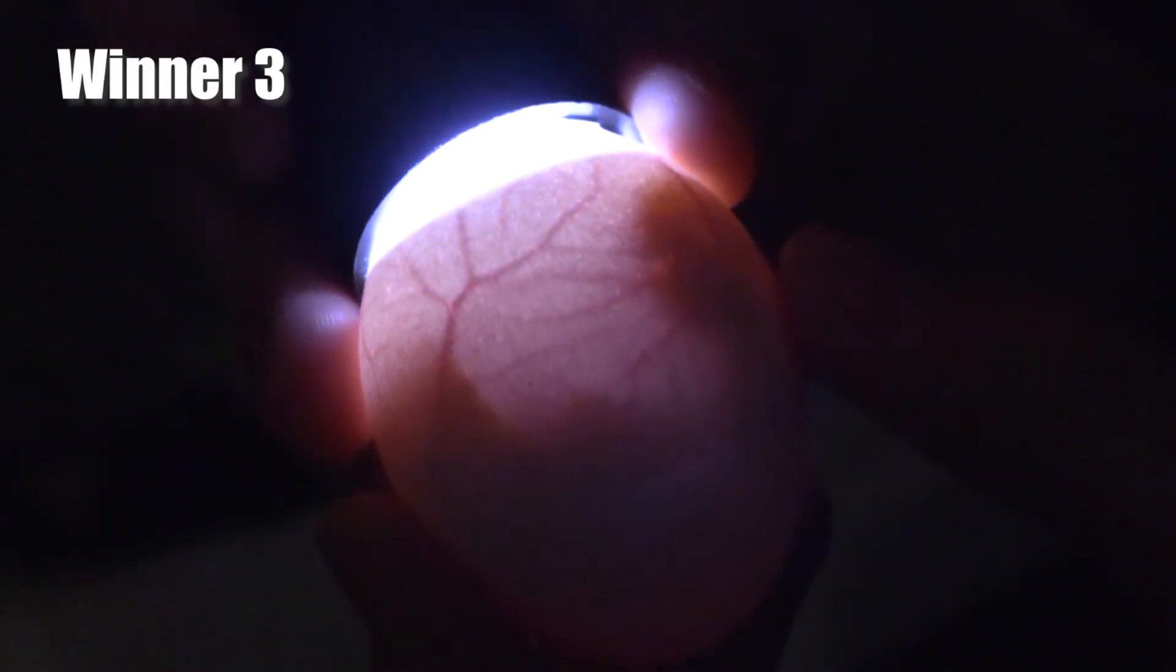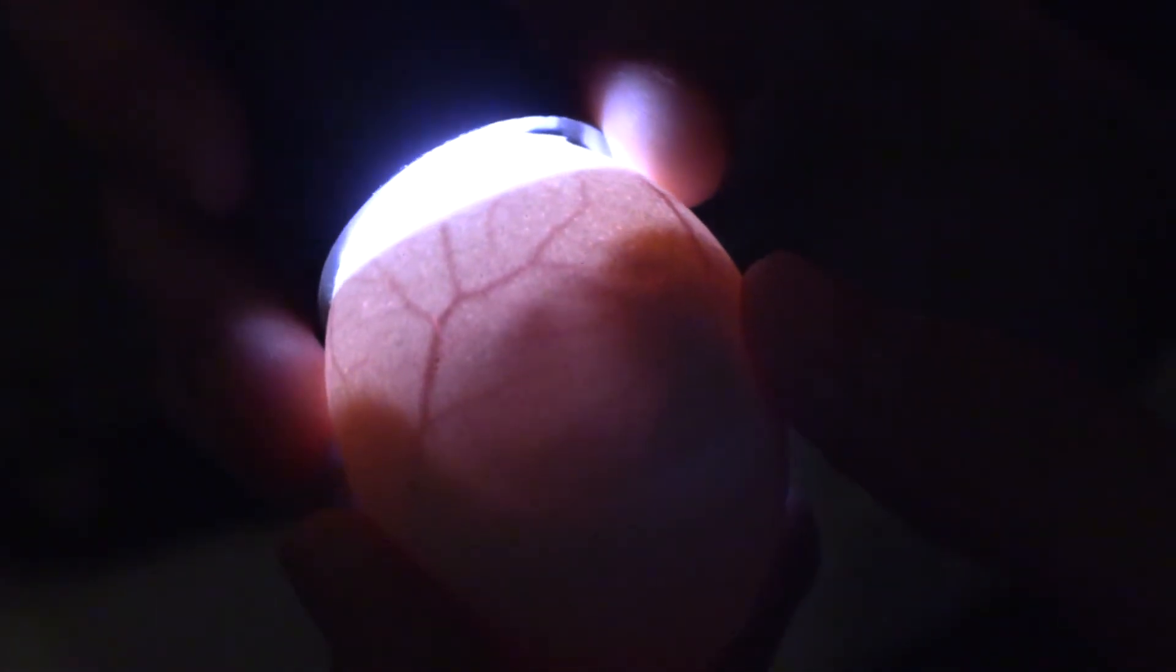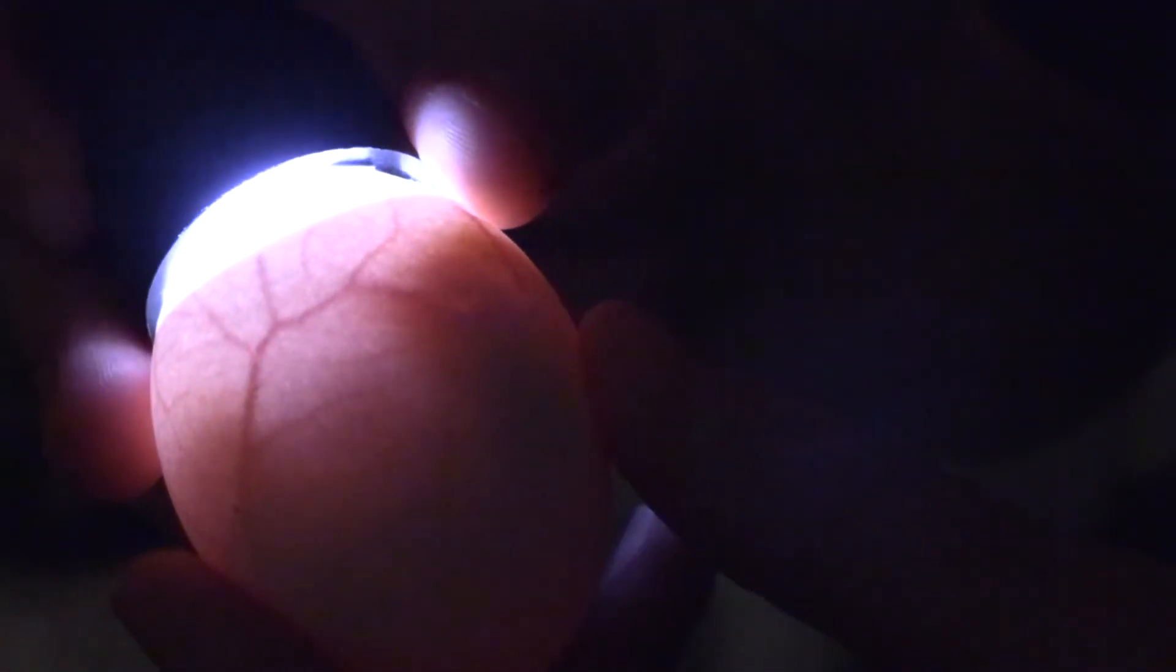Close to my thumb moving around you can see the outlines of the toes. If I rotate it a little bit further you can see the beak and the eye as that dark spot in the center.